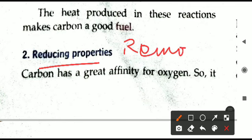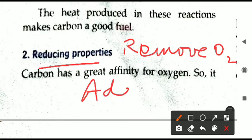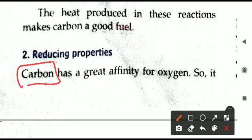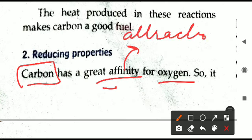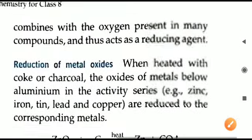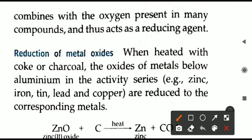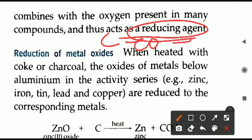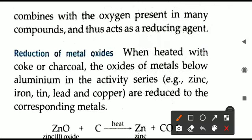Point number two is the reducing properties of carbon. Reduction means removing oxygen or adding hydrogen to a given compound. Carbon has some affinity — attraction — for oxygen. It combines with oxygen in the presence of many compounds and acts as a reducing agent. Carbon combines with oxygen and produces carbon monoxide (CO), thereby acting as a reducing agent.